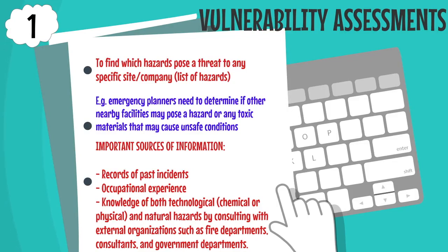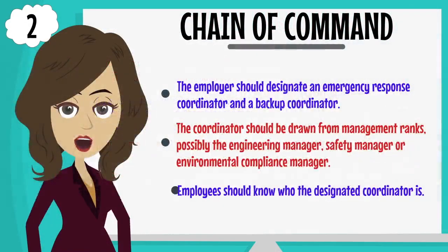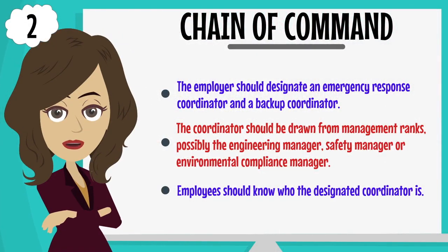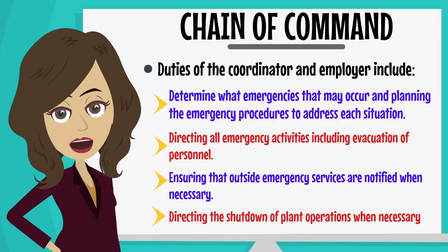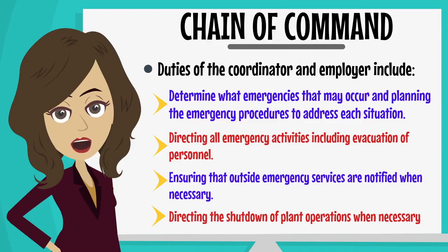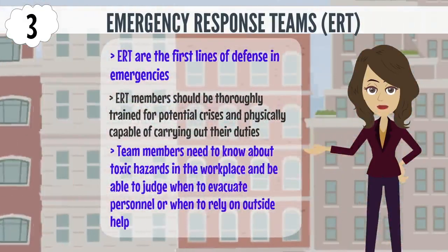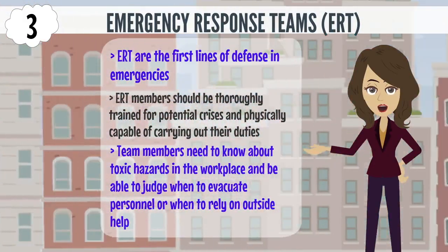The second element is the chain of command. The employer should designate an emergency response coordinator and a backup coordinator. Every employee should know who the designated coordinator is. Duties of the coordinator include determining what emergencies may occur and planning procedures to address each situation, directing all emergency activities including evacuation of personnel, ensuring outside emergency services are notified when necessary, and directing the shutdown of planned operations when necessary. The third element is creating an emergency response team — the first line of defense in emergencies.